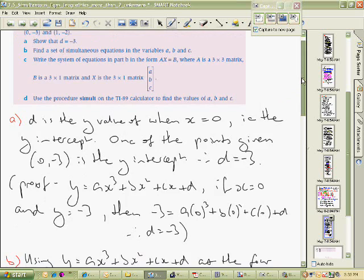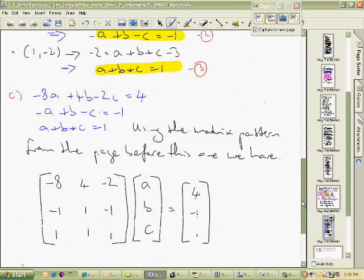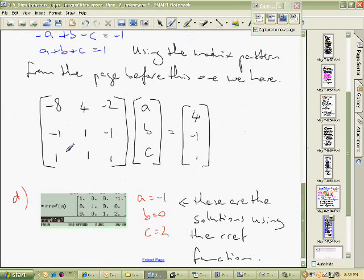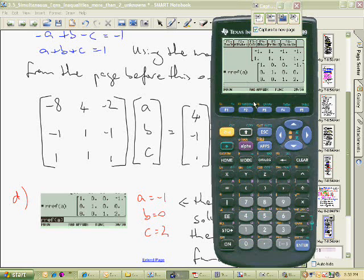So we need to really view the RF function first because I've explained in that how we obtained this matrix here and using this function we got our answers as to what A, B, and C would have equaled. We're going to now use the simult function though here.